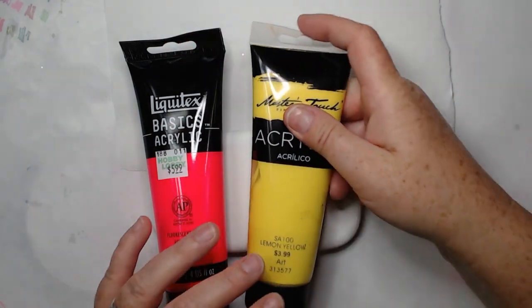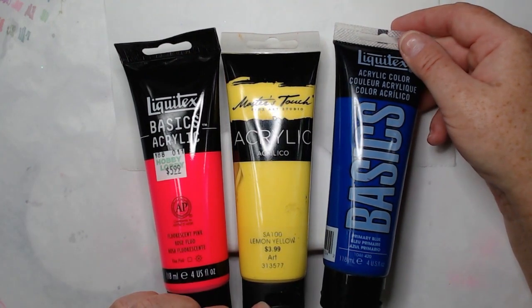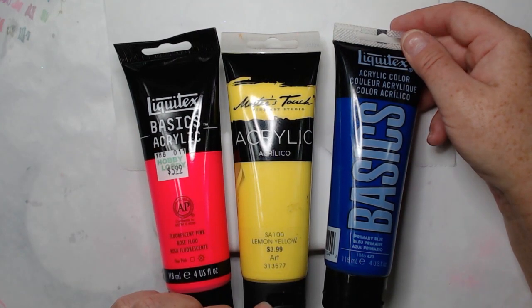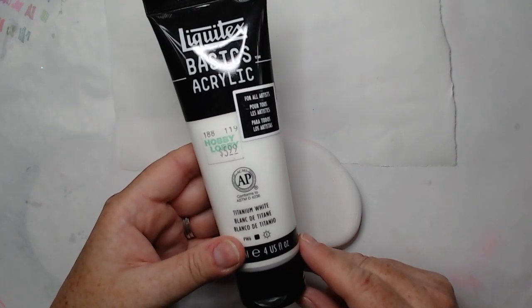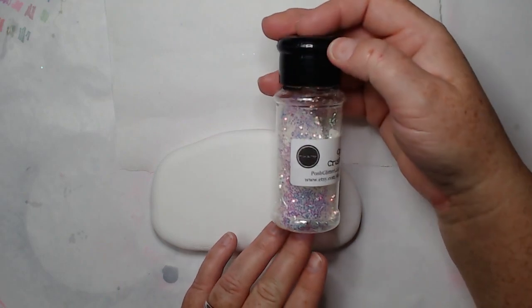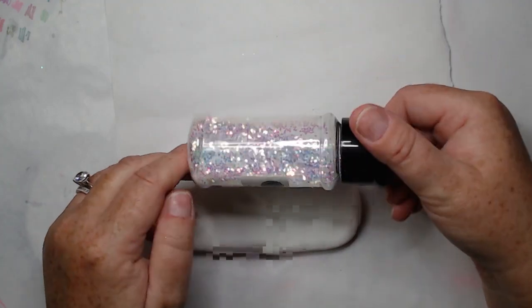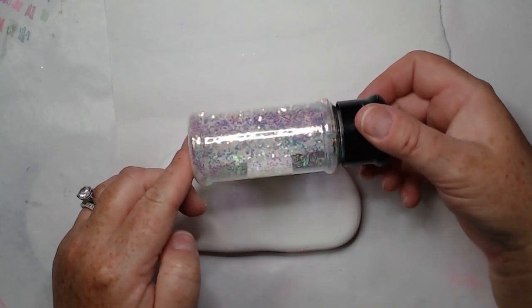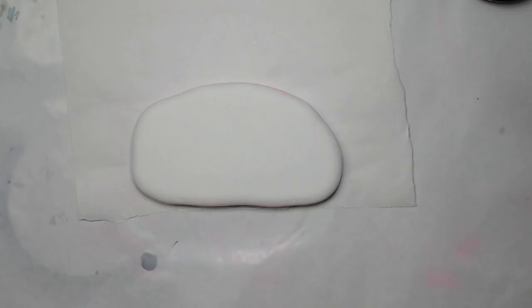I used fluorescent pink by Liquitex, lemon yellow by Masters Touch, and primary blue by Liquitex. I also used titanium white by Liquitex. Now you can use one of the Martha Stewart blenders to blend your colors. I did use a paintbrush for this. You'll also need glitter. I'm showing you Opal Crush, that's what I originally had planned to use. I do switch it to a glitter called Promise which is a little finer glitter that I thought would work better, and I'll show you that later on in the video.